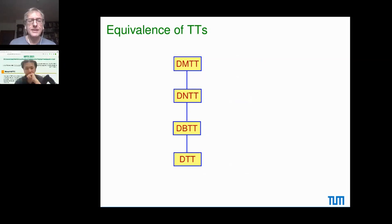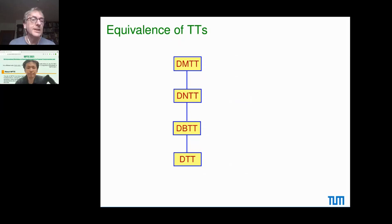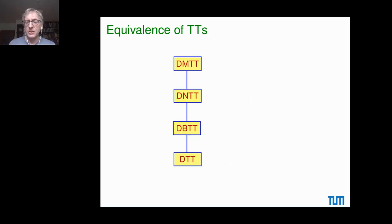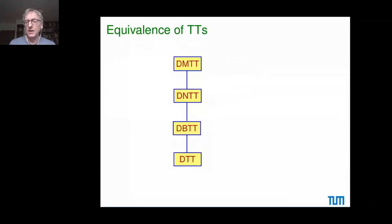At the bottom you find DTT - that means Deterministic Top-Down Tree Transducer. A top-down tree transducer is a recursive procedure which descends and recursively processes the input in a tree structured fashion and produces output. At the top you find DMTT, where M means macro - a top-down tree transducer that additionally makes use of accumulating parameters. Certain output trees can be accumulated in parameters, and in between there are other subclasses of macro tree transducers which differ in what you can do with the parameters.